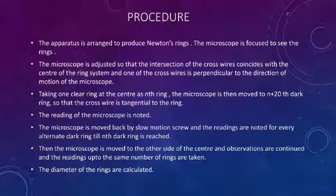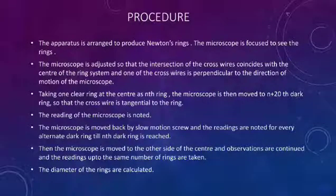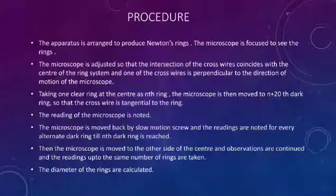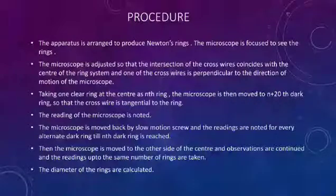The microscope is moved to the (n+20)th dark ring so that the cross wire is tangential to the ring. The readings of the microscope are noted. The microscope is moved back by a slow motion screw and the readings are noted for every alternate dark ring until the end of the dark ring is reached.